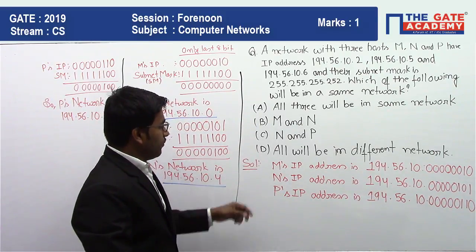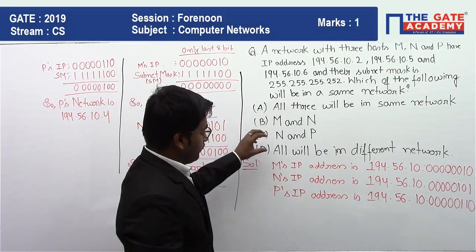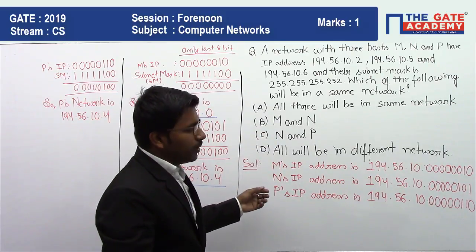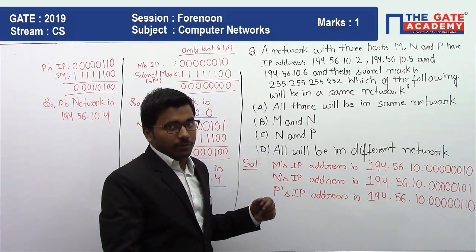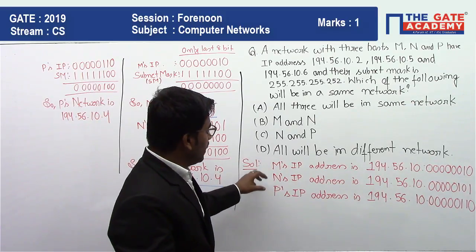To do this question, first we will see M's IP address. Since to find a network we have to multiply IP address with subnet mask, then we will get the network ID.